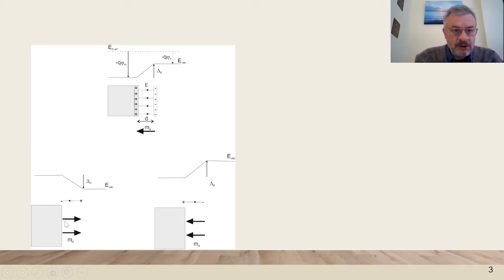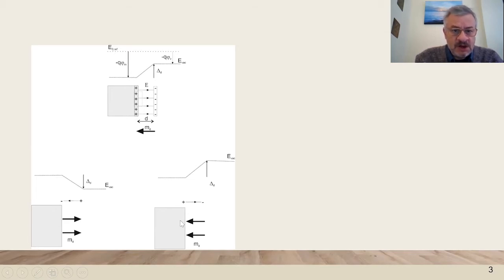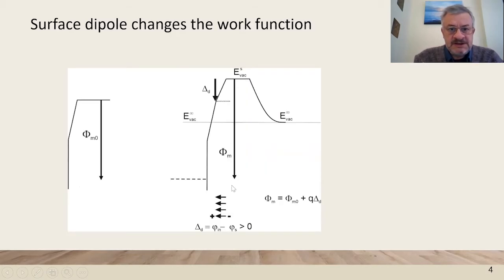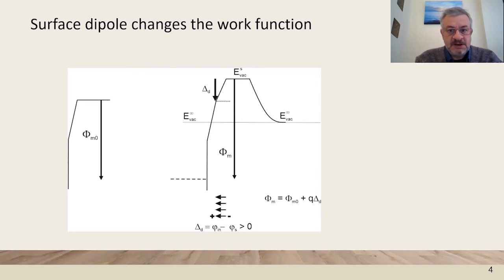Here we show a dipole pointing outwards at the surface so that the internal energy levels have been shifted upwards by the dipole energy, and here the dipole points towards the surface so that the internal molecular levels shift downwards. This shift by the dipole is going to change the work function because it will bring down the levels and increase the work function from the original situation without the surface dipole. This change can be quite significant.